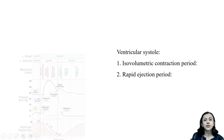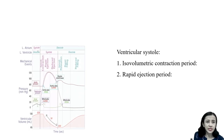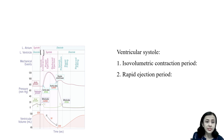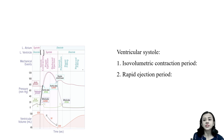Next is ventricular systole. The first phase of ventricular systole is the isovolumetric contraction period. The volume of the ventricle remains the same and the ventricles are contracting as a closed chamber. Both valves are closed and ventricles are contracting as a closed chamber, so intraventricular pressure rises sharply and rapidly.